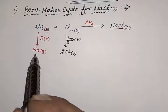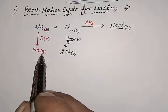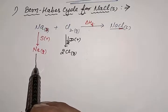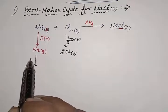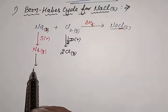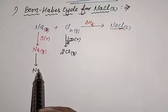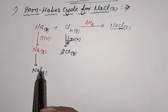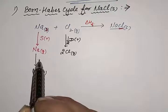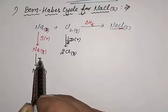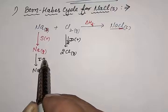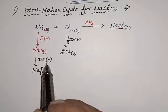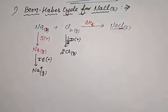When a metal is present in the gaseous state, the amount of energy required to remove its electron to form a gaseous cation is called ionization enthalpy, and we know that ionization enthalpy is also positive.